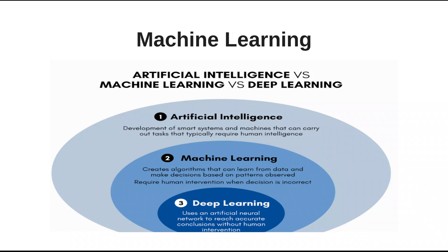Machine learning is a subset of artificial intelligence that gives computers the ability to learn without being explicitly programmed. Instead, ML algorithms learn from the data and improve their performance over time. Artificial intelligence is the development of systems and machines that carry out tasks that typically require human intelligence.